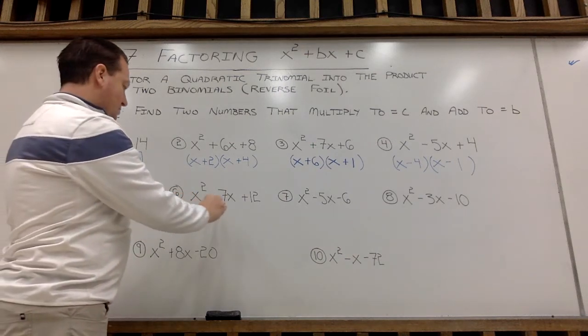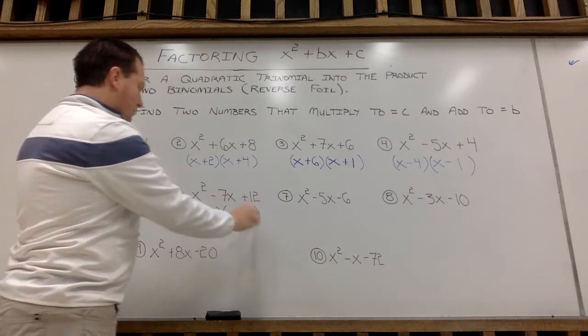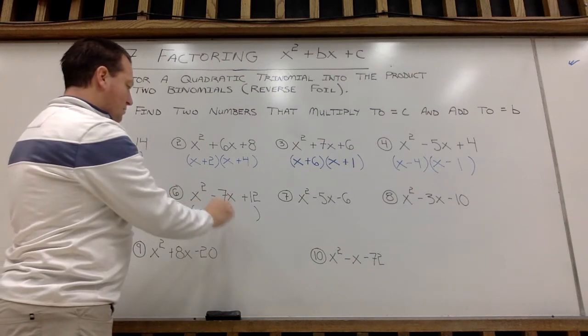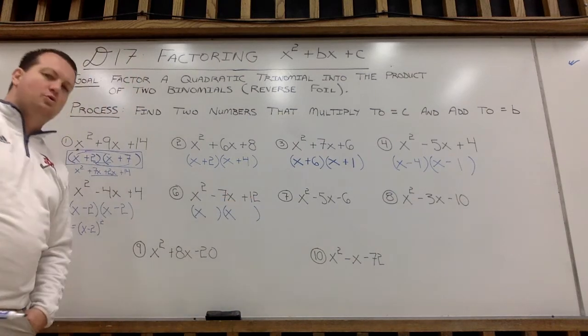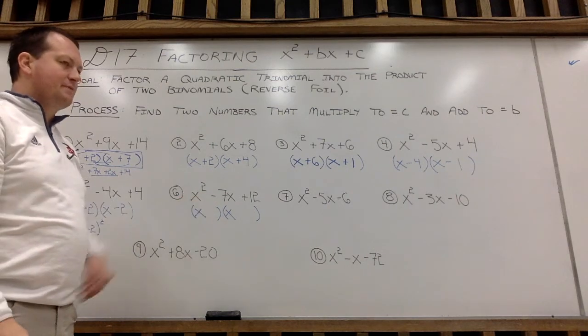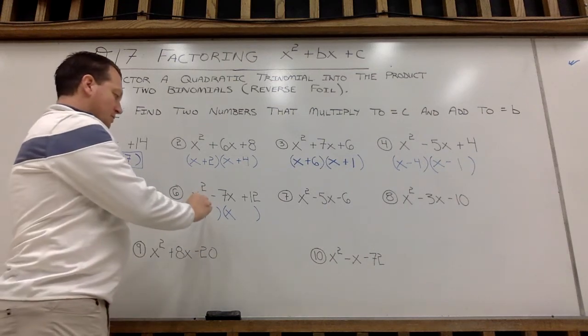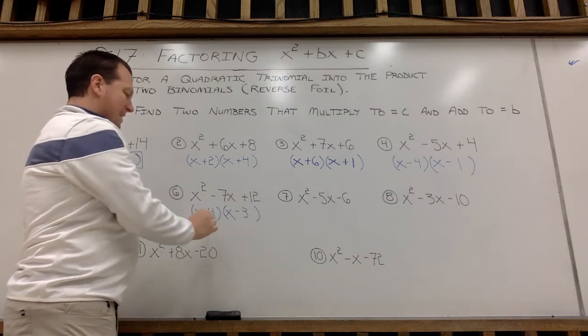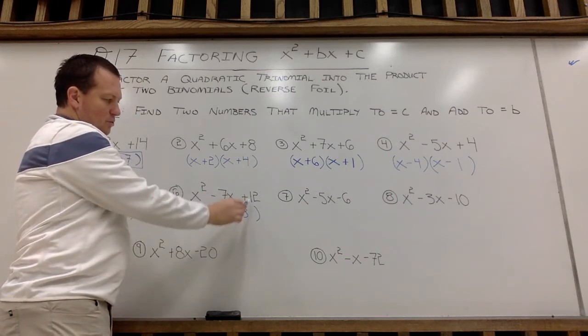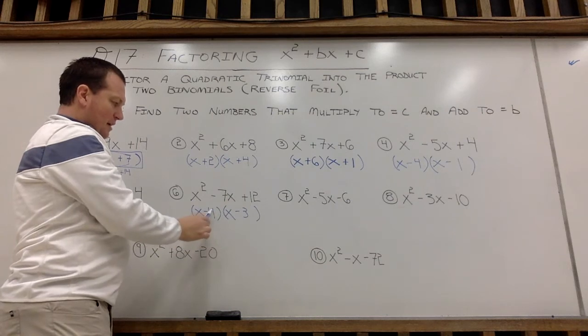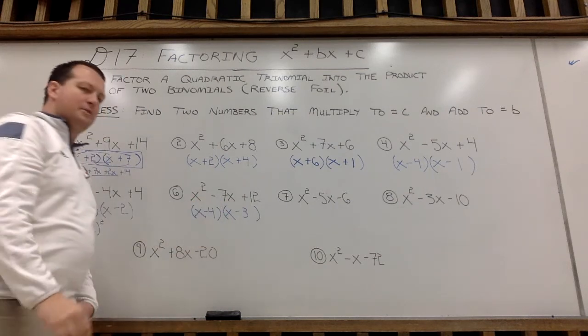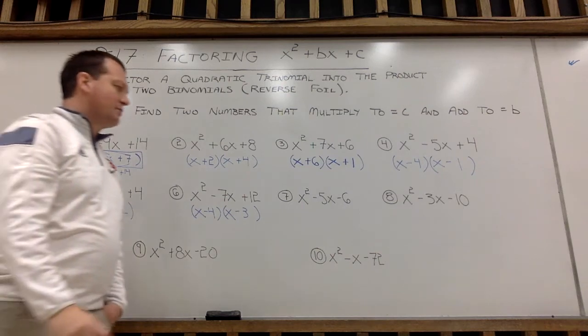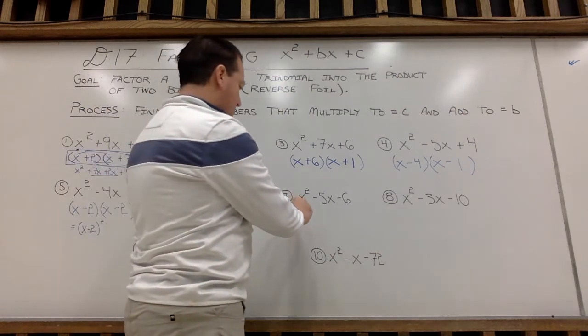All right, example 6. We need to find two numbers that multiply to make positive 12, but add to make negative 7. I think if we go negative 4 times negative 3, we'll get positive 12, and then negative 4 plus negative 3 gives me negative 7. There's my factorization.